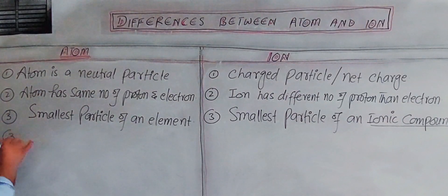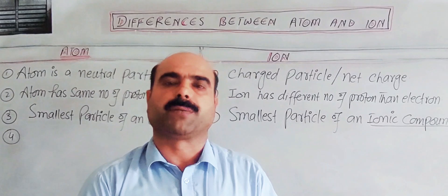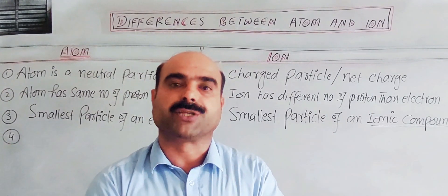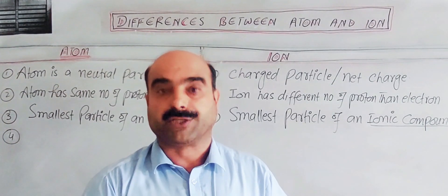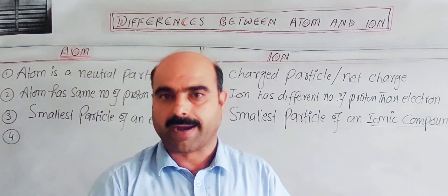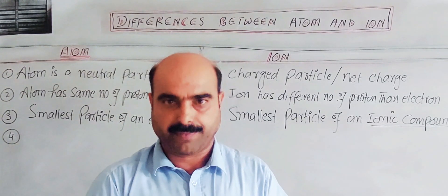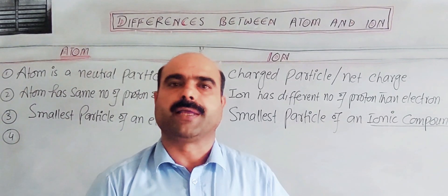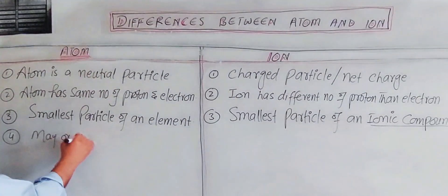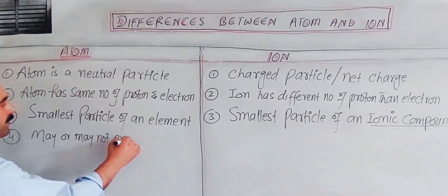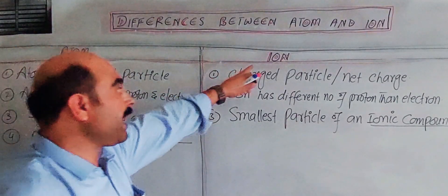An atom may or may not exist independently. Noble gases exist freely under normal conditions of temperature and pressure because their outermost electron shells are complete, making them very stable. Other atoms whose valence shells are not complete will either gain, lose, or share electrons through chemical reactions.